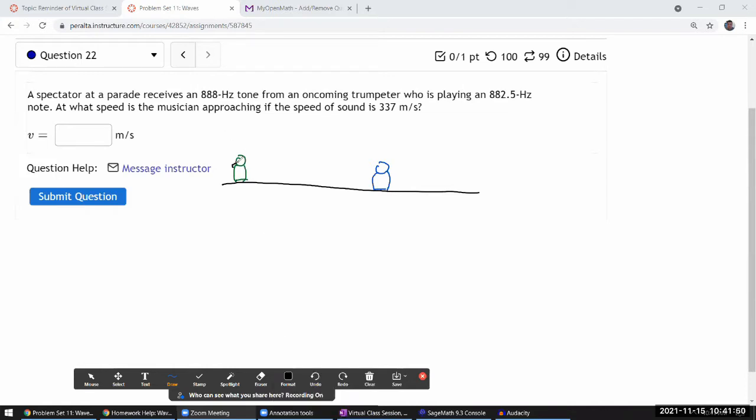So we have a trumpeteer who has, if I can draw a trumpet, trumpet looks something like this. A trumpeteer who's emitting some sound, and it's saying that a spectator, so as the sound is coming to the spectator, the spectator says, oh, the frequency observed is 888 hertz.